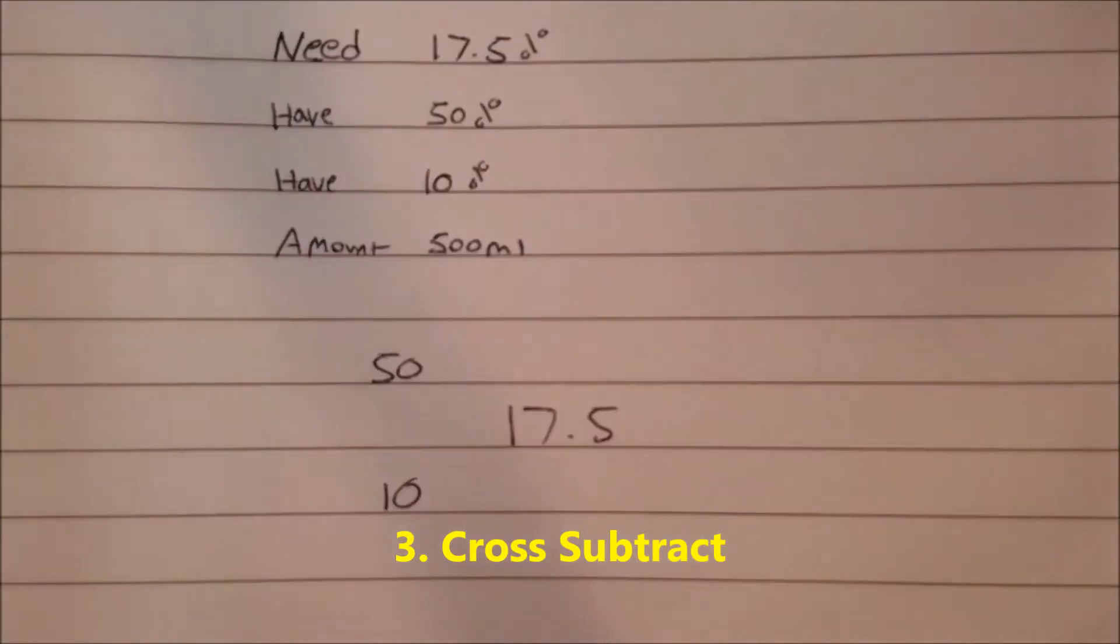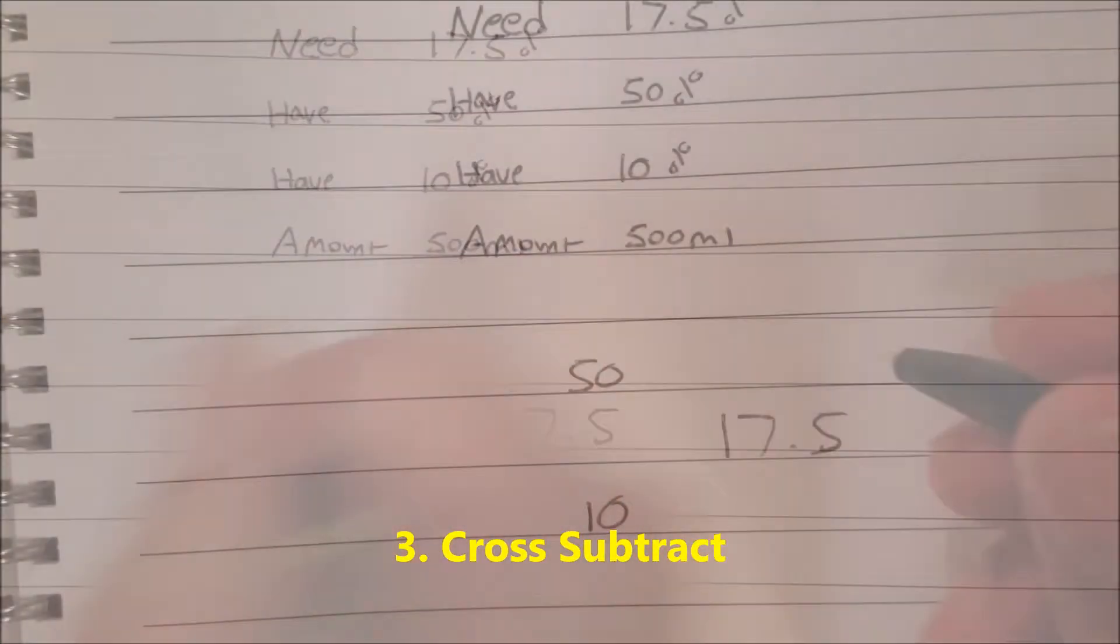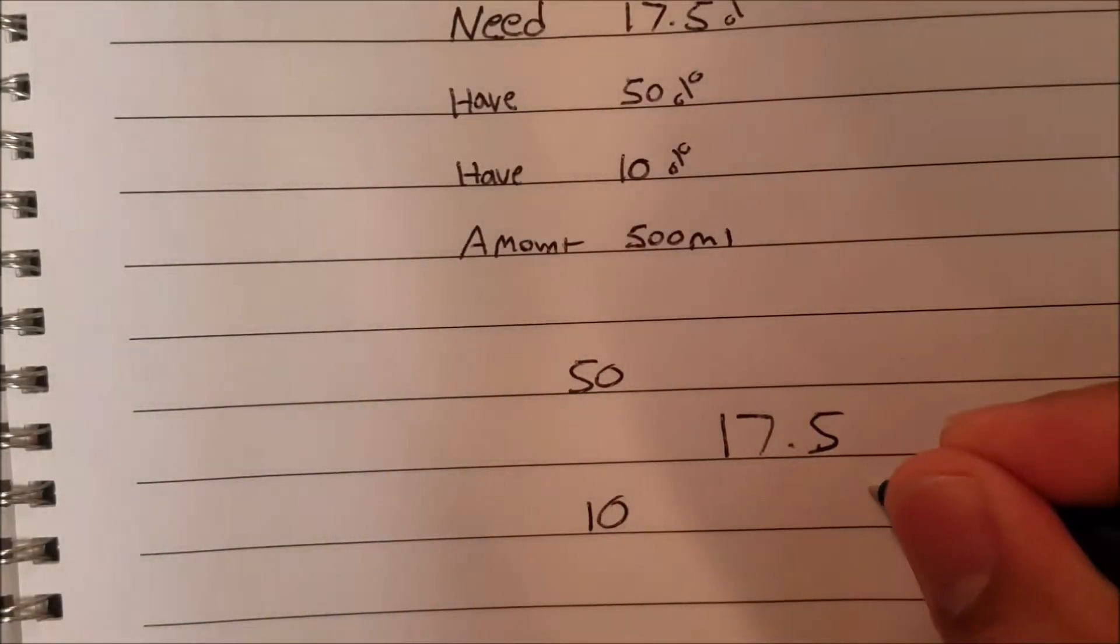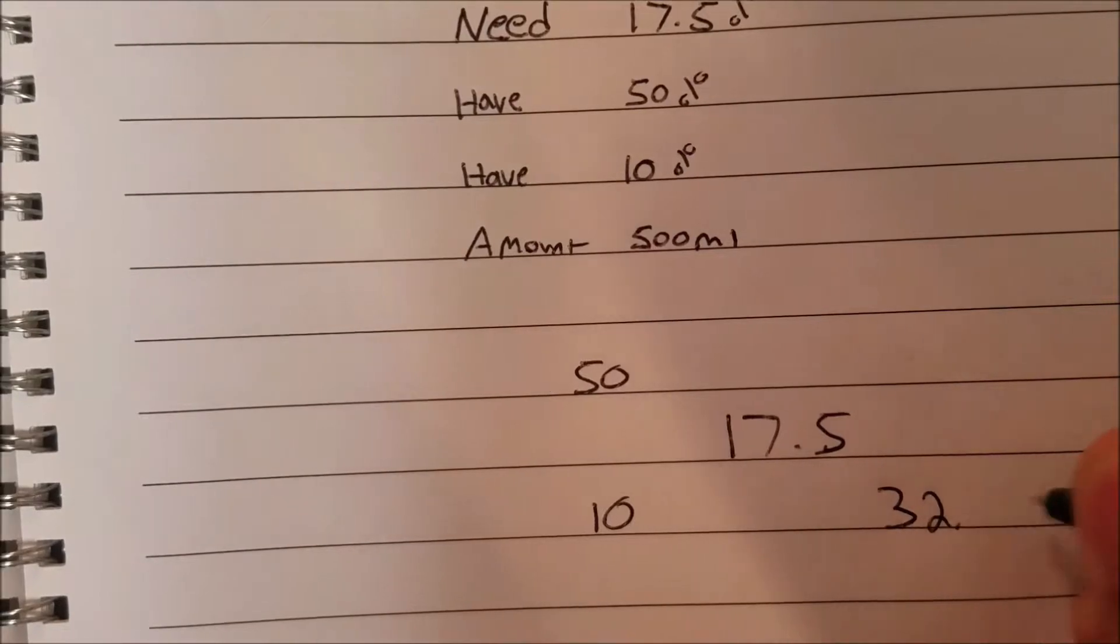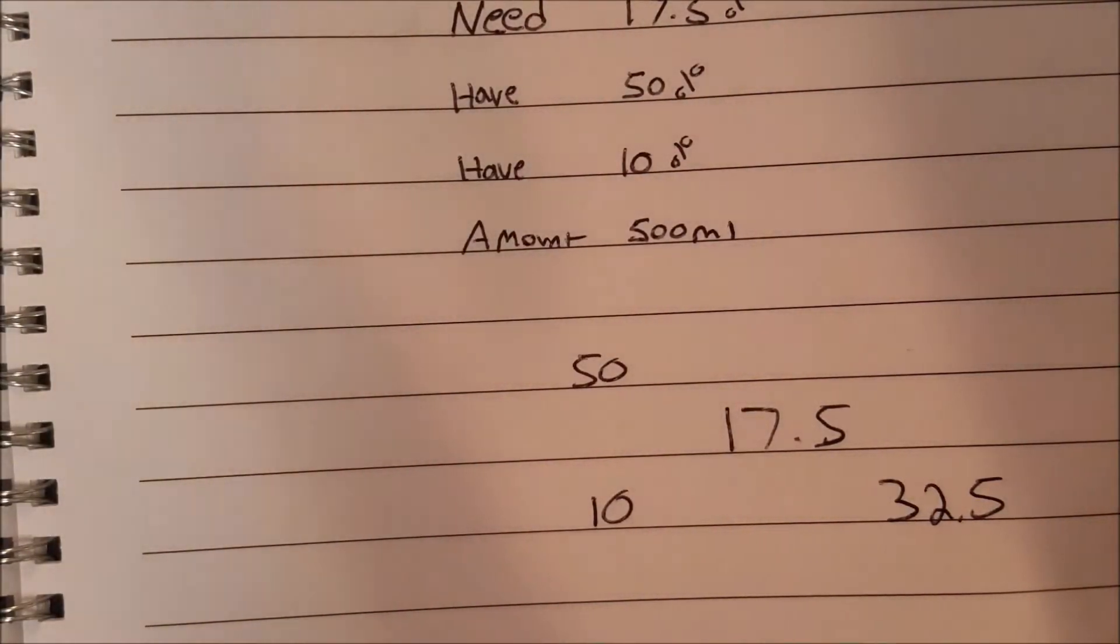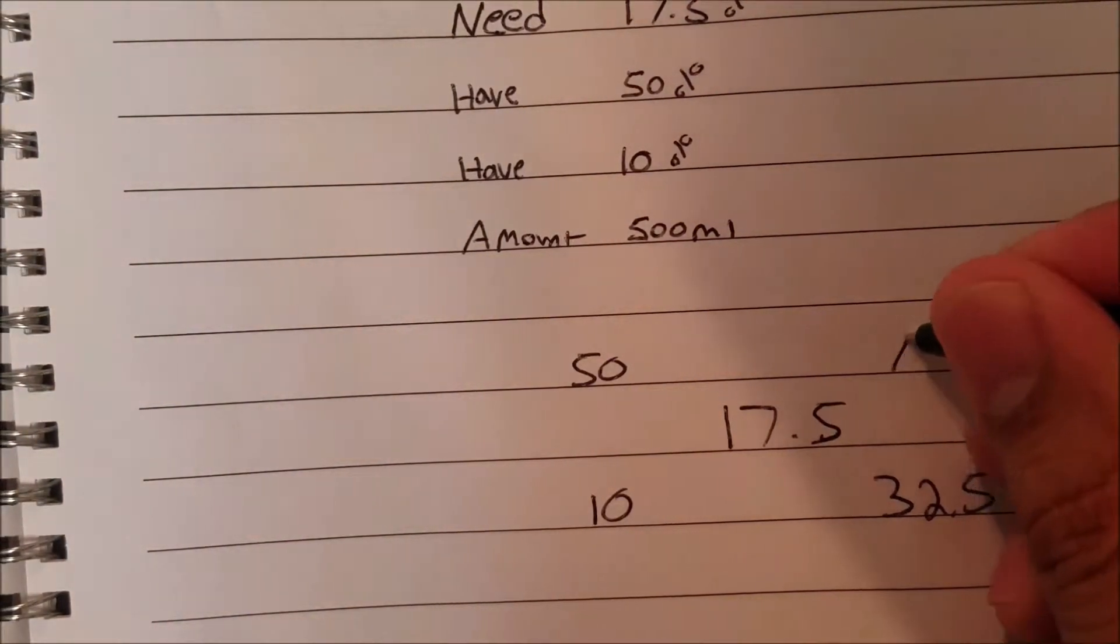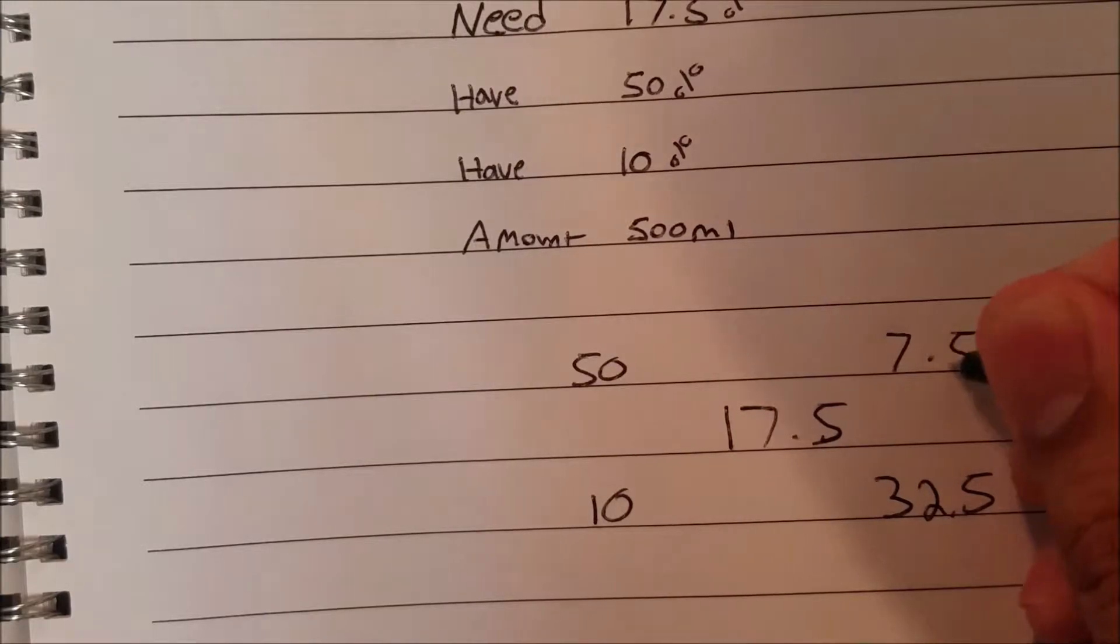The third step: cross subtract. So we're going to do 50 minus 17.5%, which is 32.5%. And then 10 minus 17.5%, which is going to leave us 7.5%.